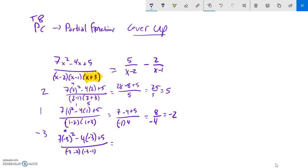That's a 9. 7 times 9 is 63 plus 12 plus 5. Over negative 3 minus 2 is negative 5. Negative 5 times negative 4. So, that's a 20 down there.